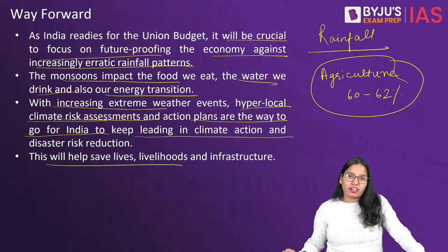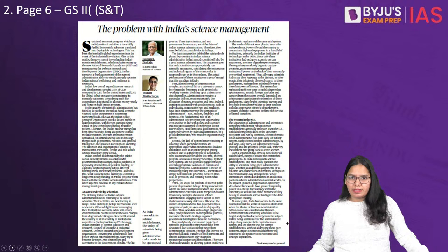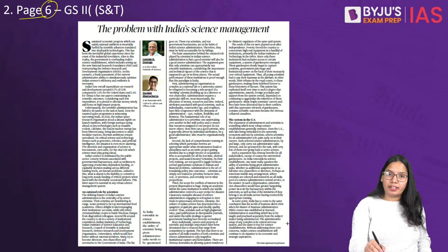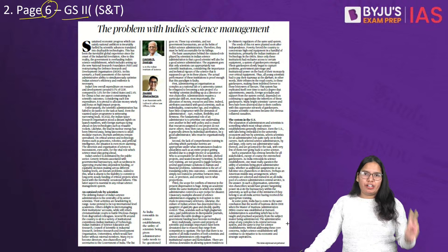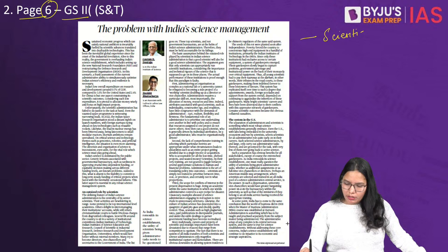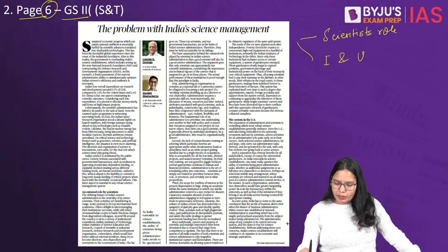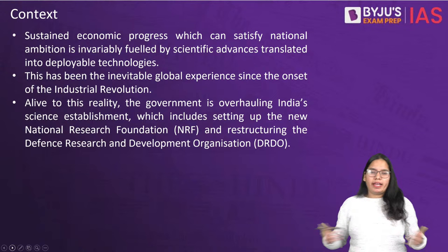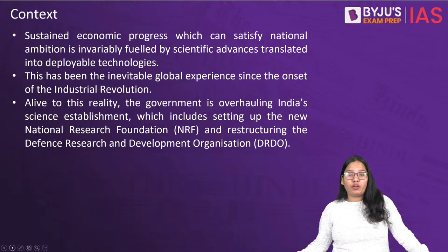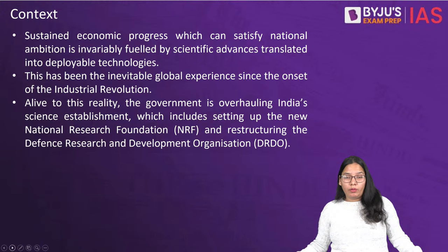The next article is on page number six and can be related to GS Paper 2 Science and Technology. It talks about two things: the dual role of scientists in both innovation and administration, and a comparison between India and the US. As India aims for a five-trillion-dollar economy, it needs sustainable scientific development — because scientific development drives economic progress, as seen in the Industrial Revolution in Britain.